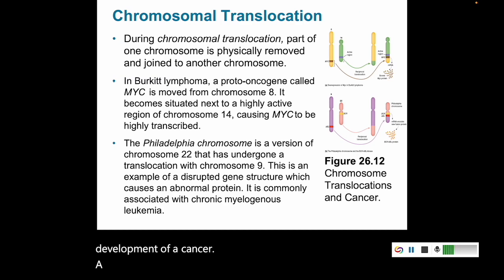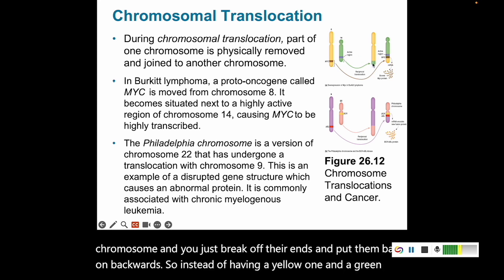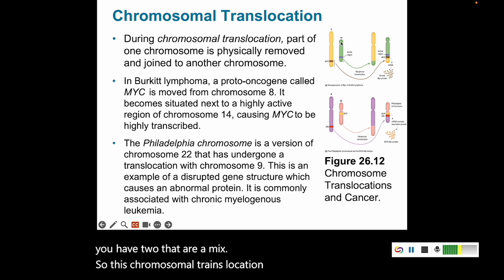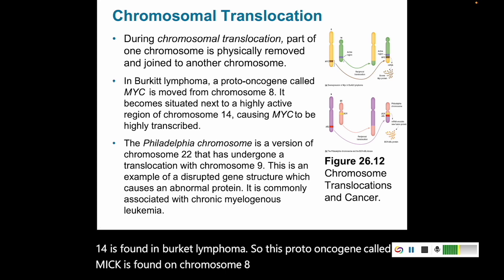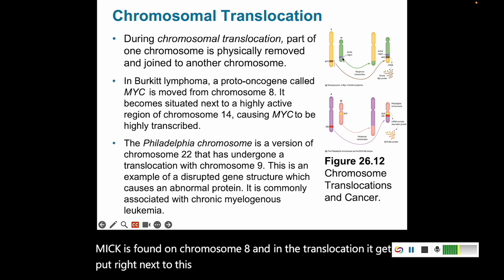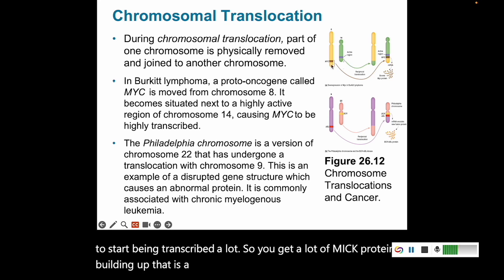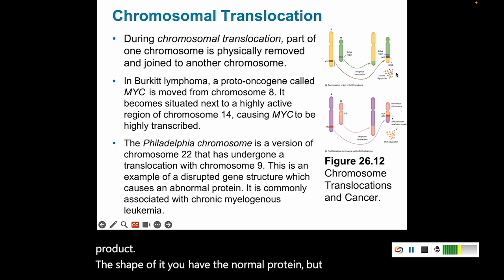A chromosomal translocation is when a normal chromosome has its ends broken off and put back on a different chromosome — instead of having a separate yellow one and green one, you have two that are a mix. The translocation between chromosome 8 and 14 is found in Burkitt lymphoma. The proto-oncogene MYC is found on chromosome 8, and in this translocation it gets placed right next to a very active gene, causing MYC to be transcribed a lot. You get a lot of MYC protein building up — the normal protein, but at an abnormal level, leading to Burkitt lymphoma.